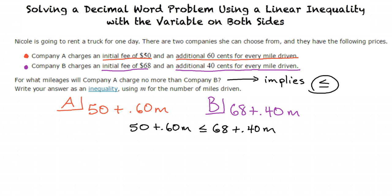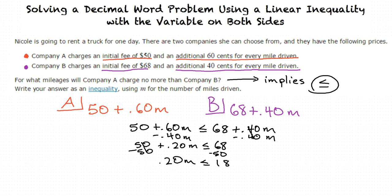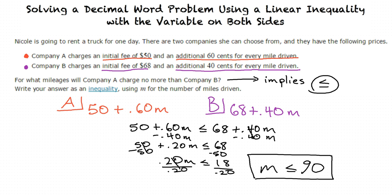Now we need to do algebra to solve for M. Our first two steps will be to subtract 0.40M on both sides and to subtract 50 from both sides. Then we divide both sides by 0.20 to get M is less than or equal to 90. This means that when the truck is driven no more than 90 miles, Company A will charge no more than Company B.